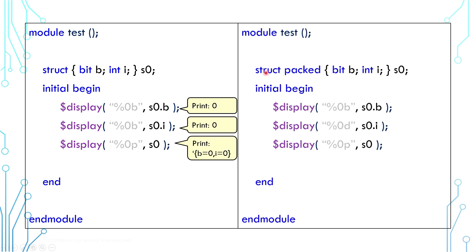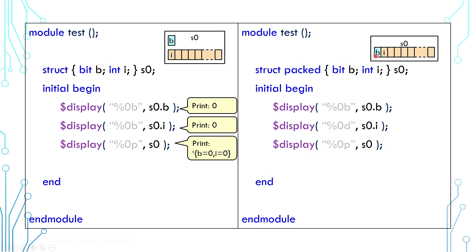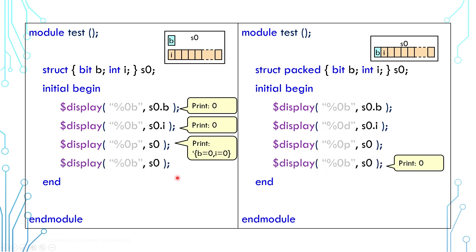Another aspect of structure variables is that they can be packed by using the keyword packed. Packed and unpacked structures are similar in many ways. The difference is that an unpacked structure is simply a wrapper — each of its members is isolated from one another. Whereas in a packed structure, its members are concatenated as one big variable and collectively form a larger number. So you can access the packed structure as one numerical variable, which cannot be done with an unpacked structure.